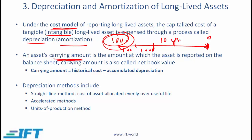An asset's carrying amount or carrying value is the amount at which the asset is reported on the balance sheet — also called net book value. The book value when you purchase the asset is 1,000. After one year, having depreciated 100, the carrying value is 900. After two years, accumulated depreciation is 200, so the net book value is 800. The formula is: carrying amount equals historical cost minus accumulated depreciation. The historical cost is sometimes also called the gross value or gross amount.